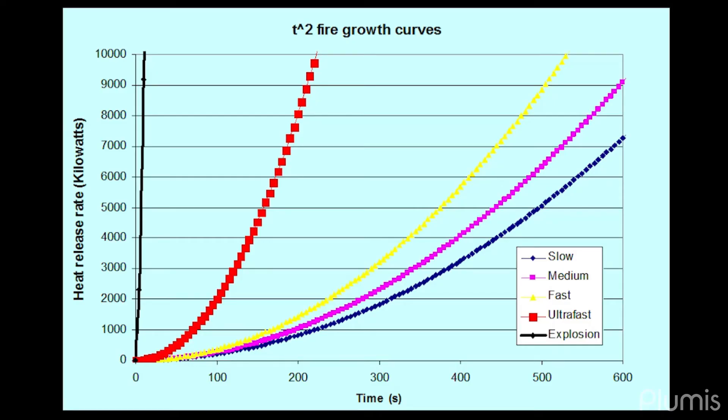This slide here shows the T-squared fire growth curves that engineers frequently use, and basically illustrates the point that nearly all fires start very small, and then after a period of time they grow very rapidly. And for this reason, people underestimate the hazard they're in, and can then suddenly find themselves trapped.